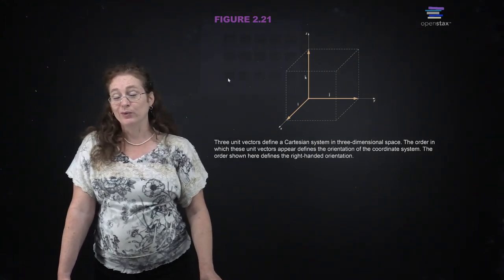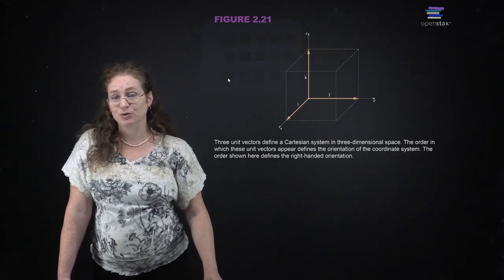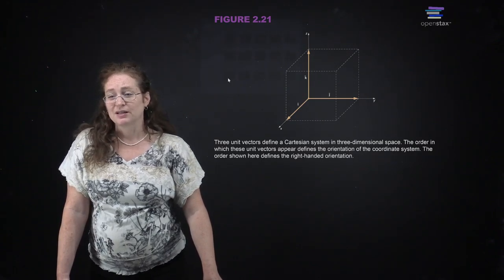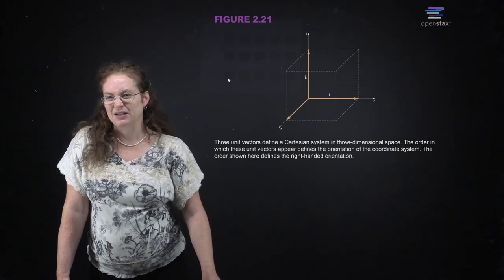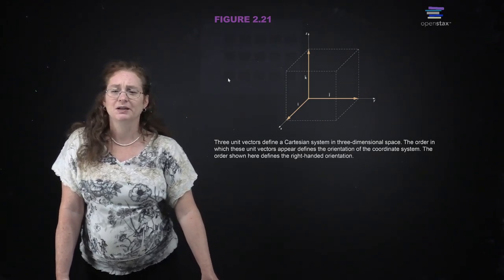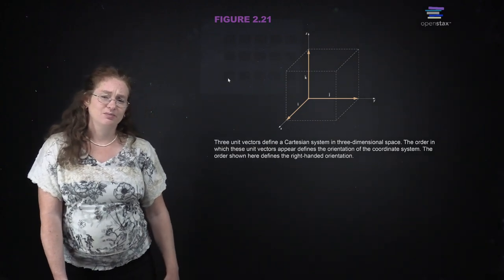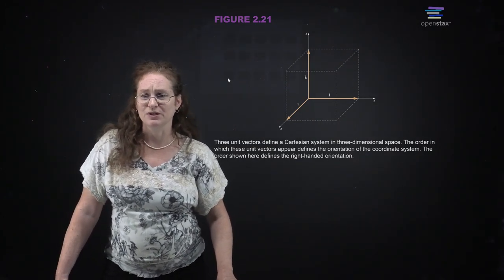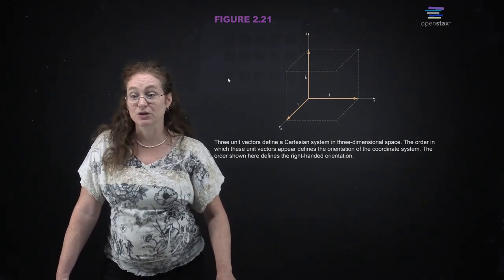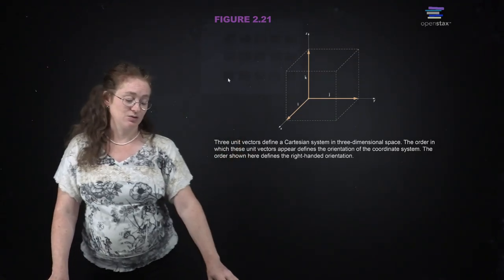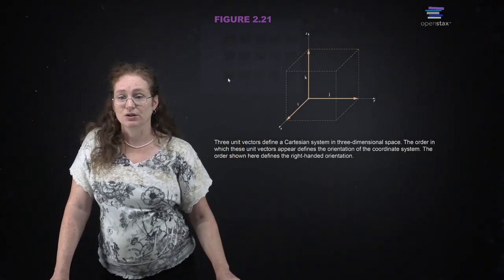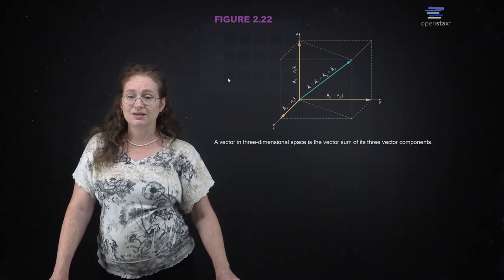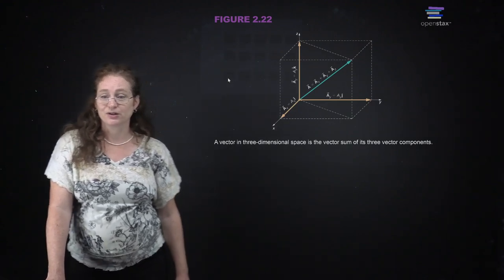Our examples so far have been in two dimensions because two dimensions is a lot easier to work with. But of course you have three dimensions in Cartesian space and we can use all of them. We will use a lot of examples with three dimensions - sometimes we flatten it and stick to one or two because you're still learning the physics, but there's always three dimensions.